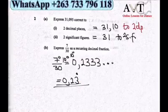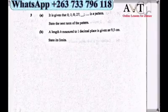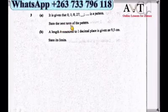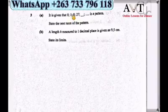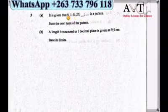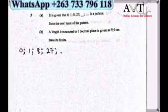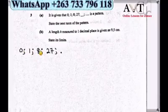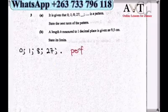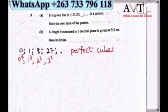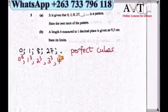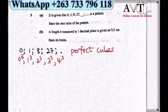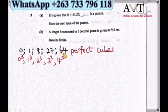On number 3, we are given the pattern 0, 1, 8, 27. We must state the next term. These are all perfect cubes: 0 cubed is 0, 1 cubed is 1, 2 cubed is 8, 3 cubed is 27. So the next term follows in order: 4 cubed is 64. Our answer is 64.